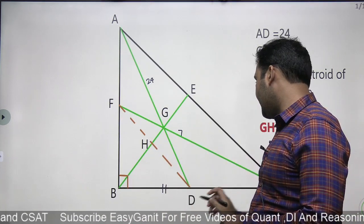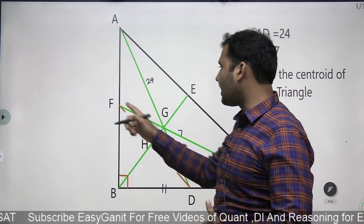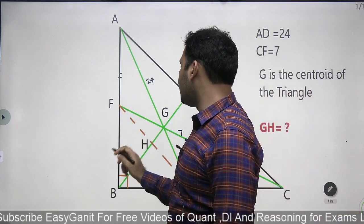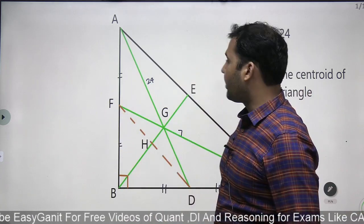D is a midpoint because AD is a median. F is also a midpoint because CF is a median.